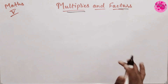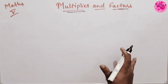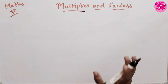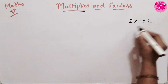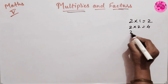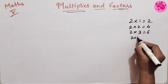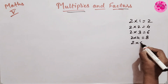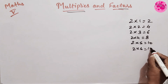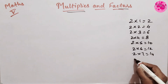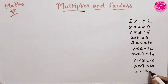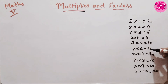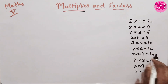Children, you must know the table of 2. In the table of 2, notice which number appears in the units place: 2 ones are 2, 2 twos are 4, 2 threes are 6, 2 fours are 8, 2 fives are 10, 2 sixes are 12, 2 sevens are 14, 2 eights are 16, 2 nines are 18, 2 tens are 20. So in the units place the numbers are 2, 4, 6, 8, 0, 2, 4, 6, 8, 0.